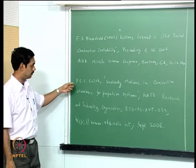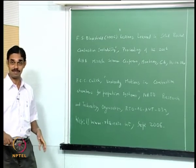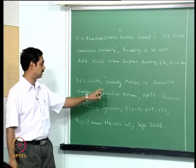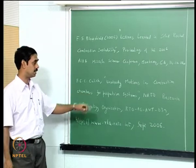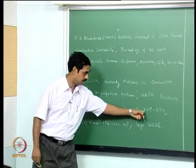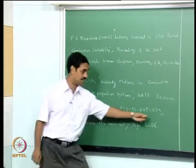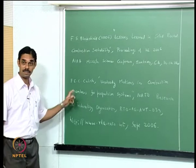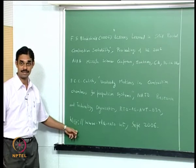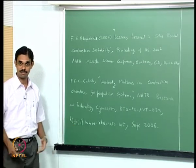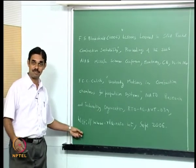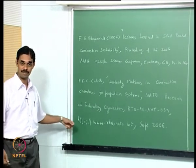The second reference, which will give all the mathematics, is from Professor Fred Kulik. The title is 'Unsteady Motions in Combustion Chambers for Propulsion Systems,' NATO Research and Technology Organization RTO AG AVT 039. Report number 39 — if you type Kulik and any of these keywords, or go to the NATO RTO website, you can get this book for free. It is a full properly written textbook, not just a cut and paste, and it is available on the internet.